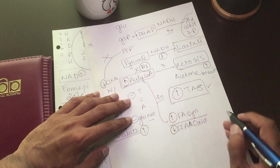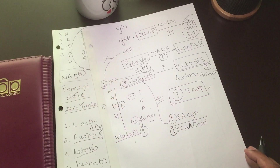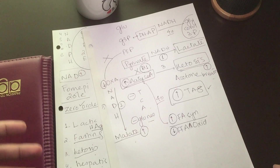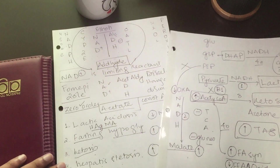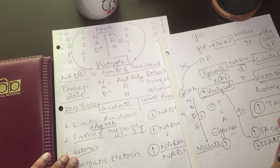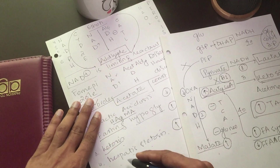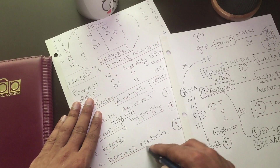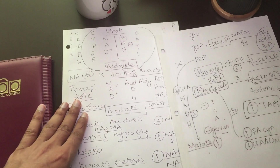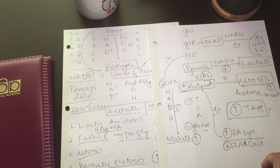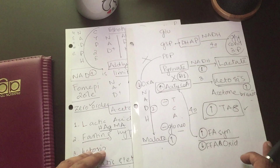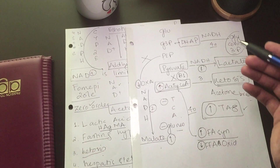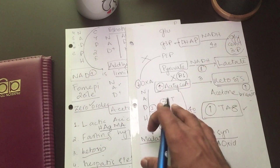Combining fatty acids with glycerol-3-phosphate increases the level of triacylglycerols (TAG). This is why alcoholic patients tend to be obese with a large belly. Increased TAG leads to hepatic steatosis. These are all the interrelated metabolic changes from alcohol metabolism.